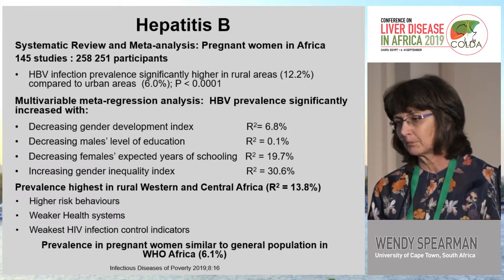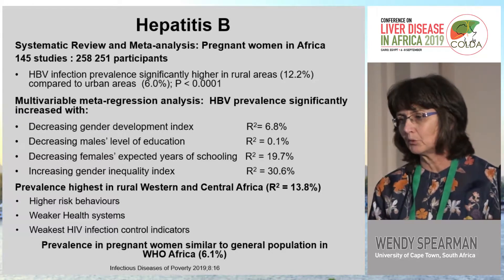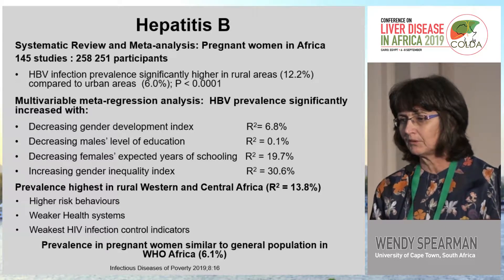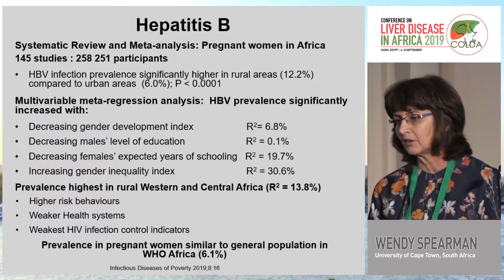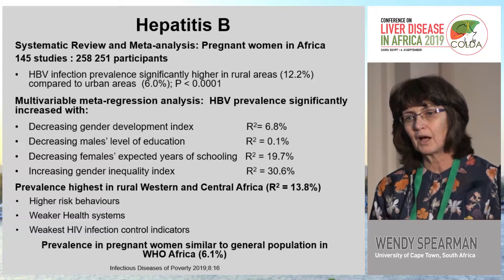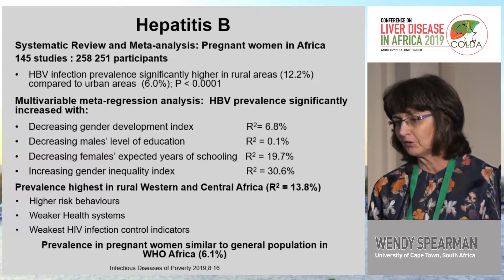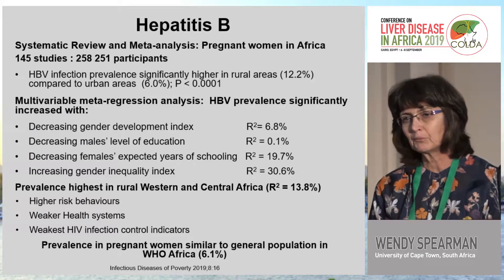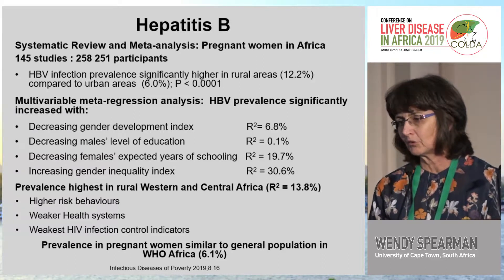As expected, prevalence was higher in rural areas. A meta-regression analysis showed prevalence increased with decreasing gender development index, male education levels, decreasing female expected years of schooling, and increasing gender inequality index. The prevalence was highest in rural Western and Central Africa, related to weaker healthcare systems where HIV infection controls are also problematic. The prevalence in pregnant women in Africa was similar to the general population.